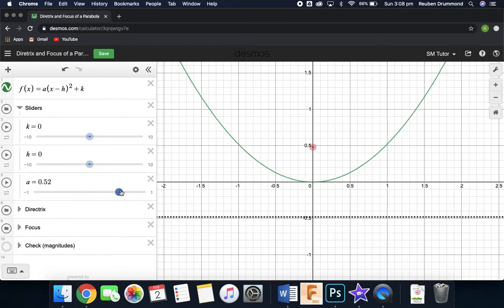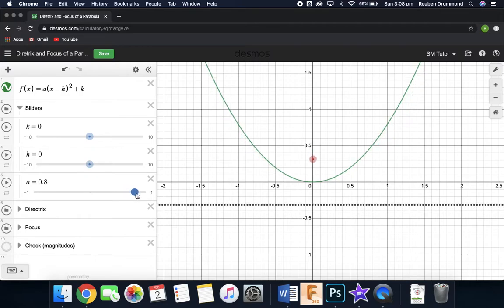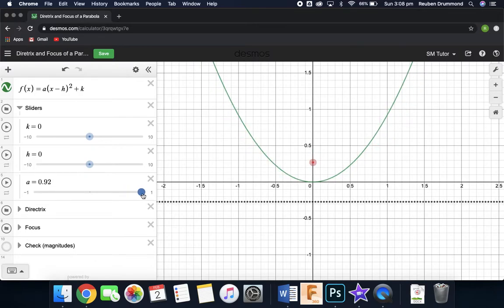So as we increase A, it does get closer, the directrix and focus. As we go the other way, it gets further away.